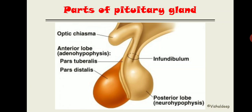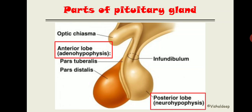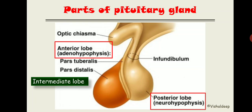The pituitary gland is divided into two main parts: the anterior lobe, known as adenohypophysis, and the posterior lobe, known as neurohypophysis. Between these two lobes there is one more lobe known as the intermediate lobe, or pars intermedia, which is almost absent in human beings — it is much larger and more functional in some lower animals. It is basically lost in the adult. There are two structures in our body related to the endocrine system that are lost in adult: one is the intermediate lobe of the pituitary gland, and the second is the fetal adrenal cortex.